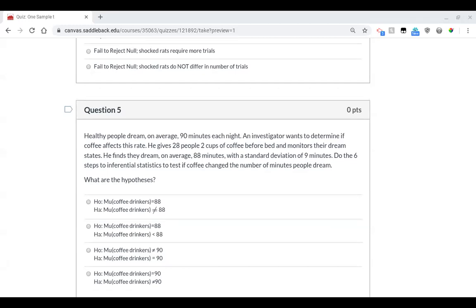So mu would be the overall average of the population. So it says healthy people dream on average 90 minutes, so that's going to be our mu. Our sample size is 28 because he says it's 28 people. Those 28 people report an average of 88 minutes, so that's our X bar. And our S or standard deviation is 9 minutes.